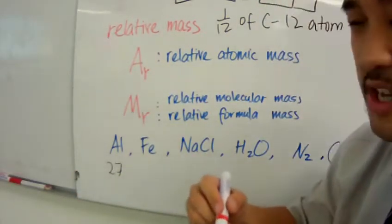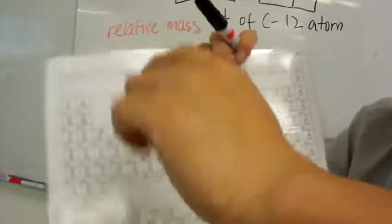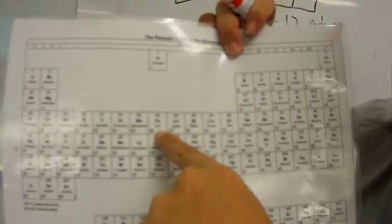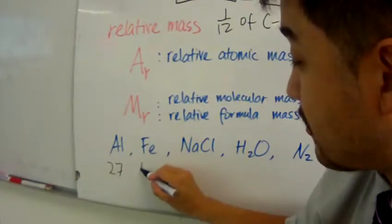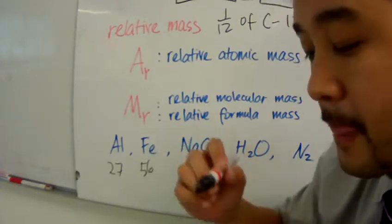What about the relative mass of iron? Well, let's look at a periodic table and there we go. There's twenty-six and there's fifty-six. Well, it's the fifty-six. That's the bigger of the two numbers. And so that's your relative mass.